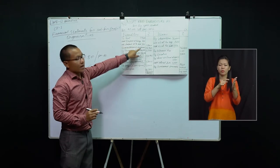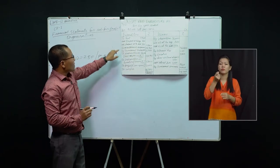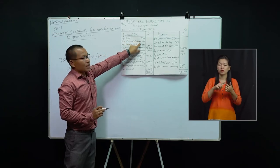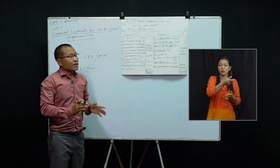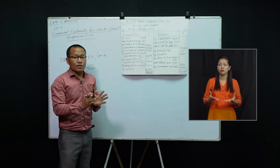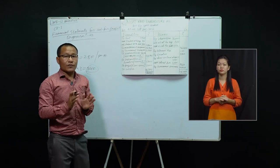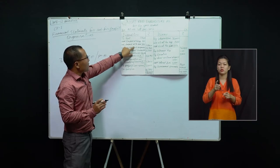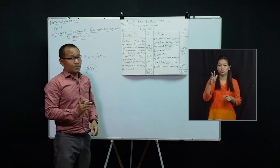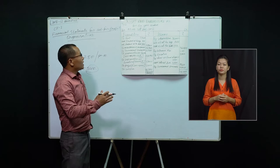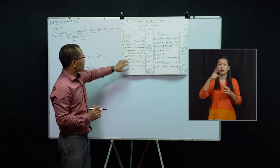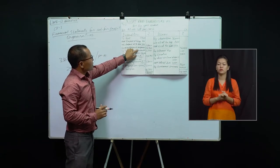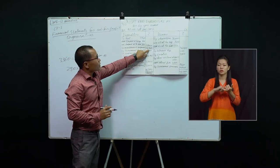Prepaid rent at the beginning is added because it relates to the current financial year 2012, while prepaid rent at the end is deducted because that amount belongs to the next year. Miscellaneous expenses come to 15,340.